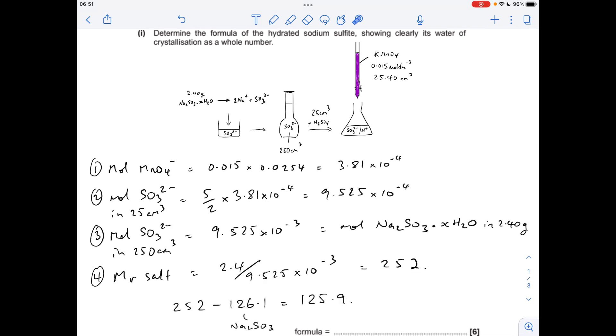Next thing we need to do is subtract the MR of the sodium sulfite part, so that's 126.1. If we take that off the 252, we're left with 125.9. So that's obviously the MR of the x·H2O part. If we divide that by 18, which is the MR of H2O, we get 7 to the nearest whole number. And so the formula of the salt is Na2SO3·7H2O.